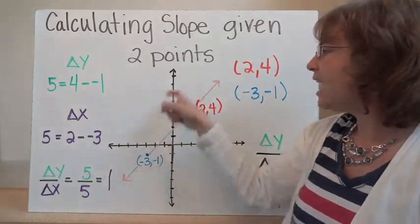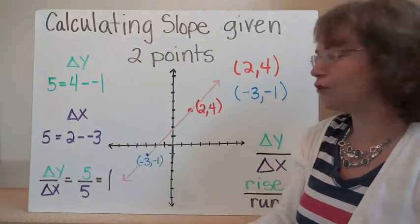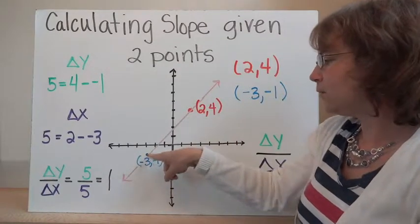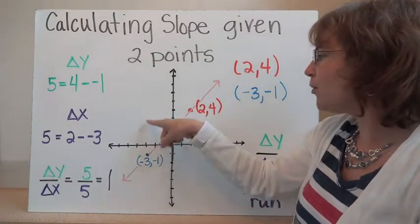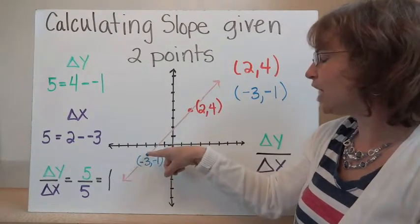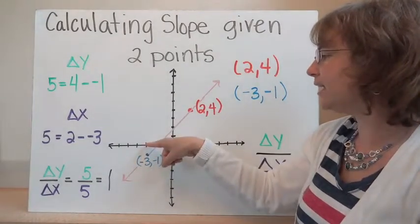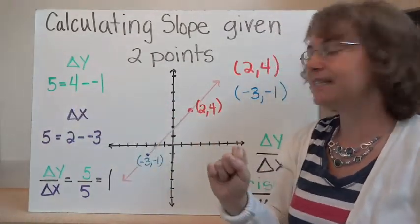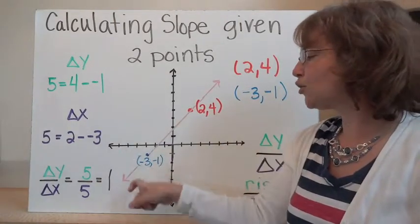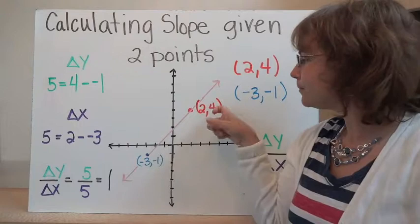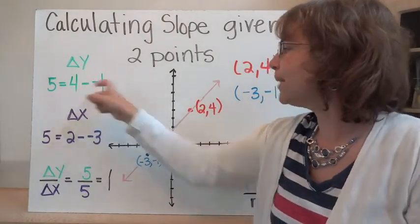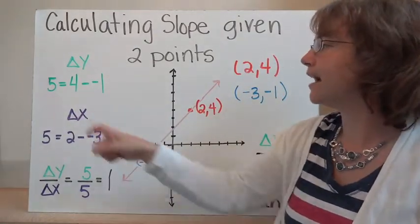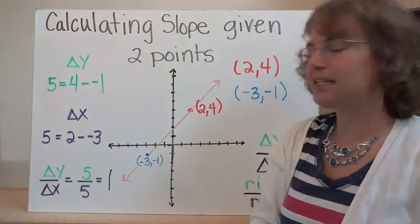Let's start with delta y — how much we've changed in the vertical direction. Looking at these two points, we've gone from negative one up to four. We've changed a total of five. We can also calculate this by taking the endpoint and subtracting where we started: four minus negative one gives us positive five.